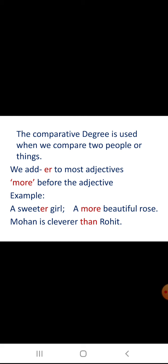The comparative degree is used when comparing two people, two things, or two places. With the adjective we add -er, or we place more before the adjective. For example: a sweeter girl, a more beautiful rose. We also use than to compare. For example, Moghan is cleverer than Rogan. Here than is used for the comparative degree.